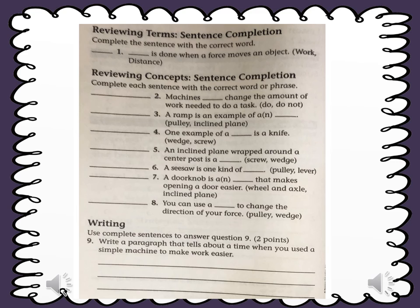Number 7. A doorknob is a simple machine that makes opening a door easier. Which simple machine helps us work there? It's wheel and axle. Because the doorknob is like a wheel and the center post that attaches to the knob is like an axle.